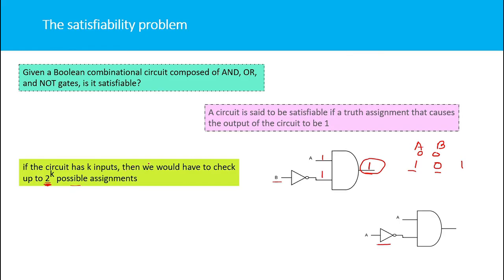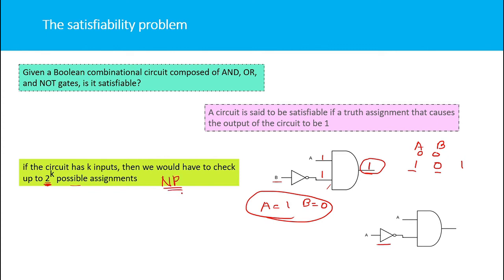However, we can verify the result in polynomial time — that is, if we are given a specific input like a equals 1 and b equals 0, we can verify whether those values produce an output of 1 in polynomial time. So the circuit satisfiability problem is an NP problem.